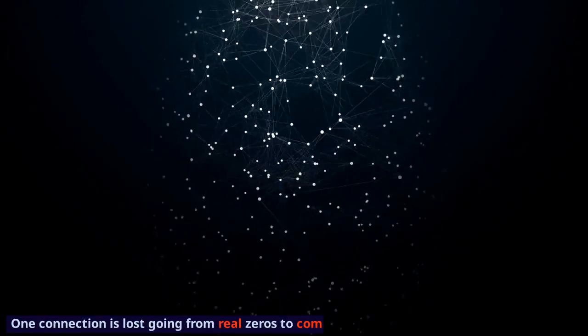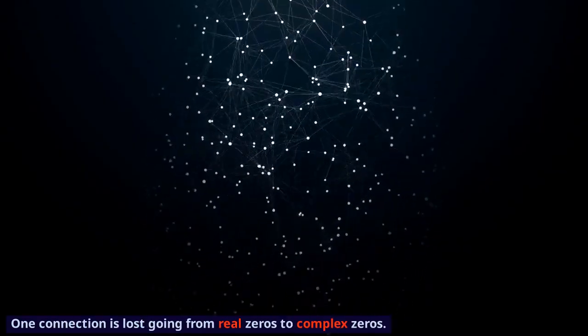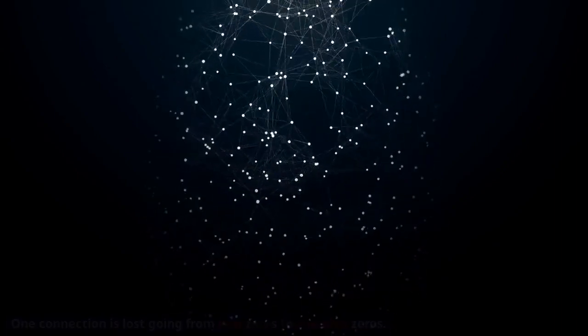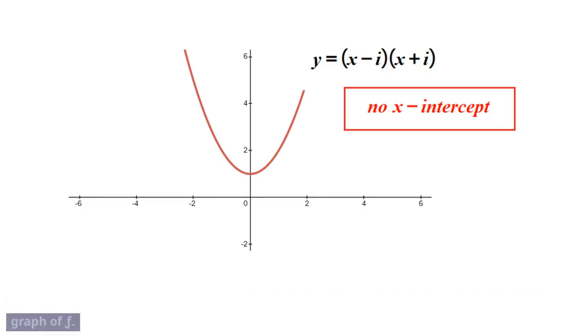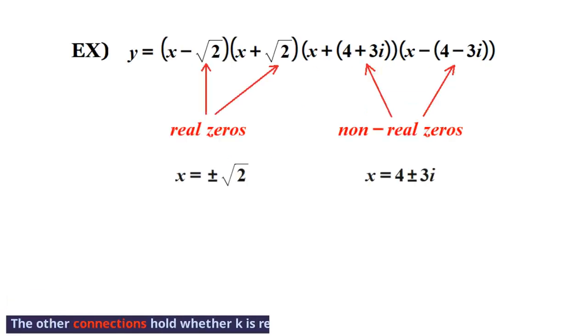One connection is lost going from real zeros to complex zeros. If k is a nonreal complex zero of a polynomial function, then k is not an x-intercept of the graph of f. The other connections hold whether k is real or nonreal.